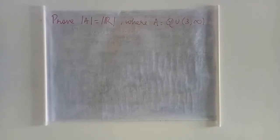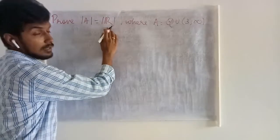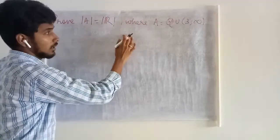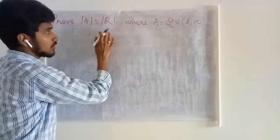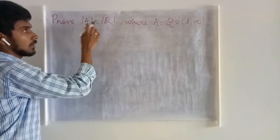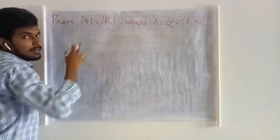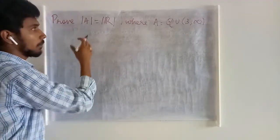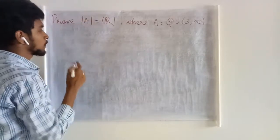In the next problem, what we are going to prove is, this set A and the set of all real numbers have same cardinality. In order to achieve this, what we have to say, we have to say this and this has same number of elements and we can establish a 1-1 and onto mapping between these two sets.